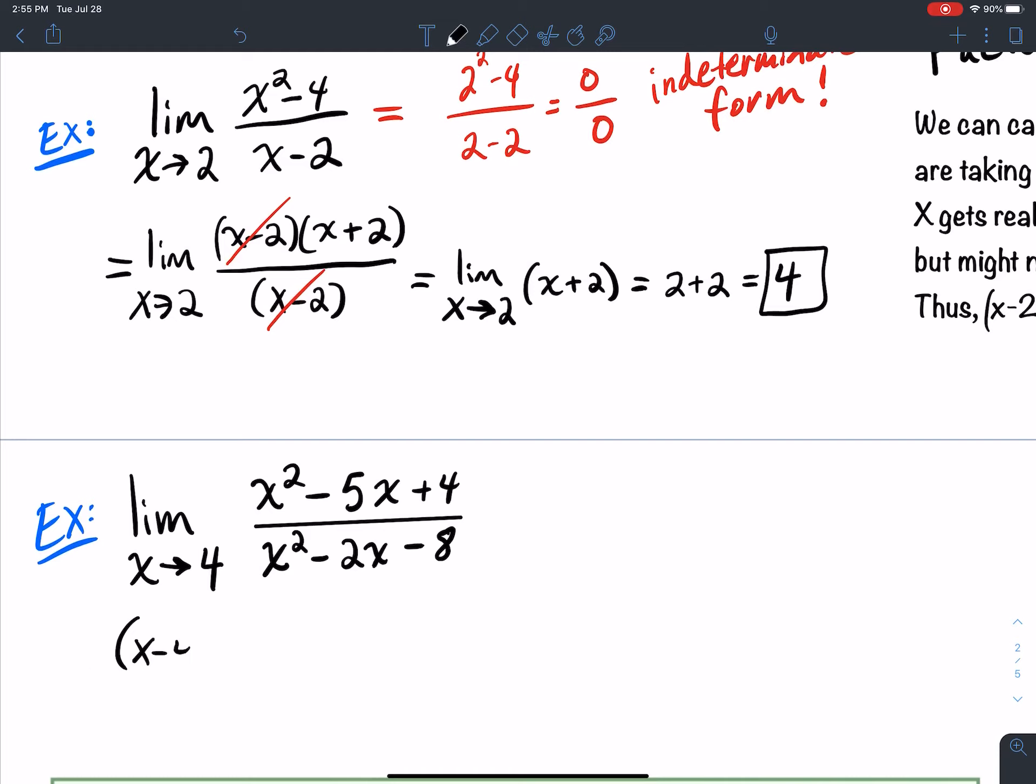So when I plug in 4, always try to plug in, see if it works. If I plug in 4 for x, I get 4 squared minus 5 times 4 plus 4. And then I have 4 squared minus 2 times 4 minus 8. Now the numerator, when I do the arithmetic there, I'm going to get 0. And the denominator, when I do the arithmetic there, I get 0.